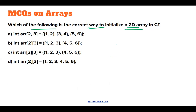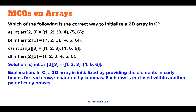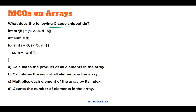The next question asks which is the correct way to initialize a 2D array in C. A 2D array requires two square brackets, a data type, and a name — options A, C, and D are incorrect. Between B and C, we need to define the number of rows inside curly brackets, not rectangular braces. Therefore, option C is the correct answer for defining a 2D array.